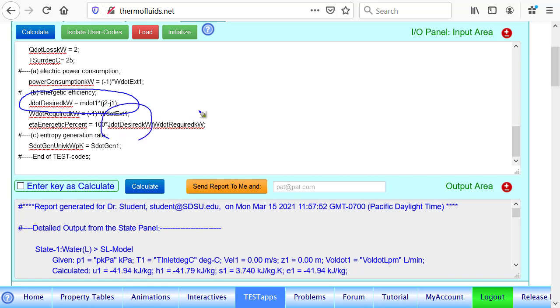And therefore the efficiency is this divided by the power consumed. Well, I'm calling it w dot required, we could write down power consumed here. And finally, the entropy generation rate is simply s dot gen1 calculated in the device panel.